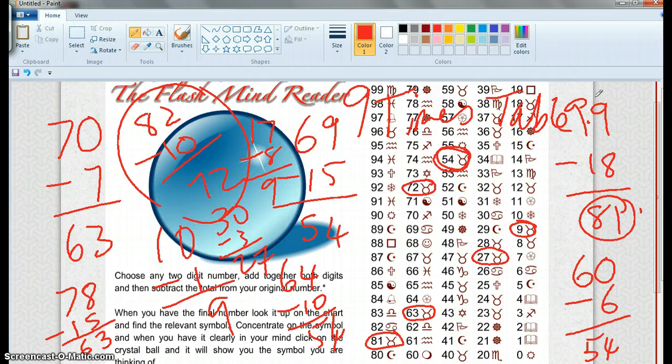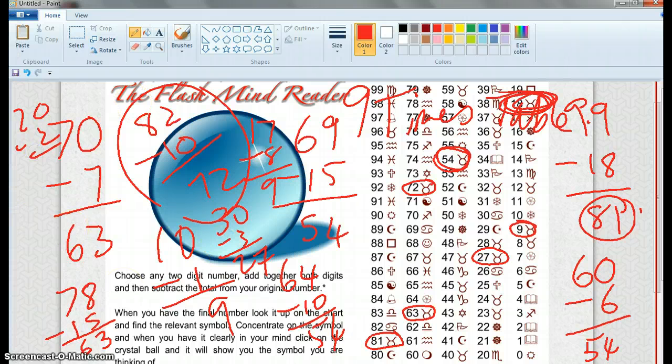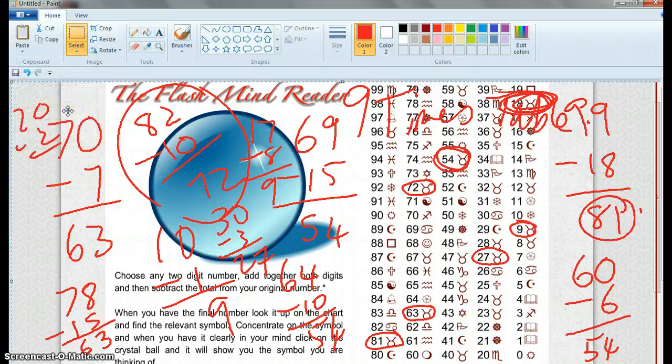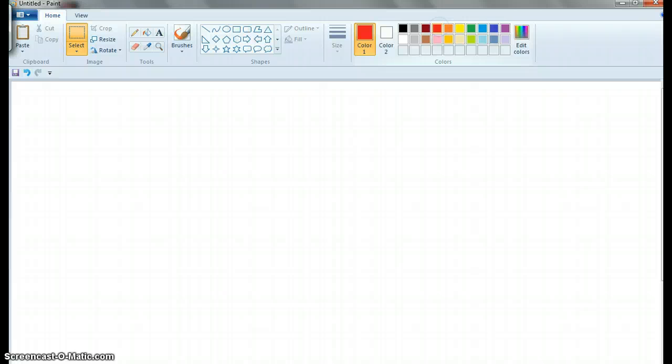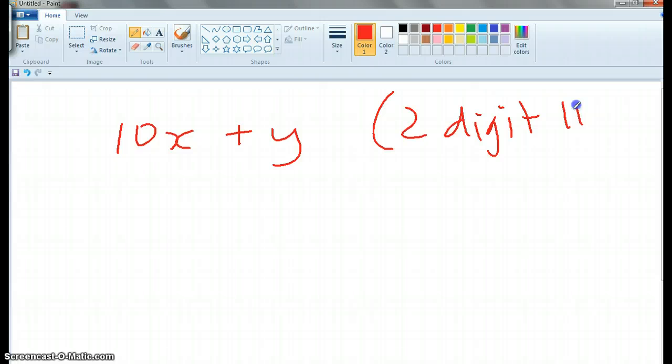How would you get 18? 20 less 2. Now a two-digit number is going to be 10 lots of a one-digit number plus a one-digit number. So this is our two-digit number. For example, if x is 2 and y is 3, that would be 23.